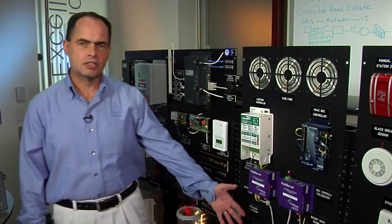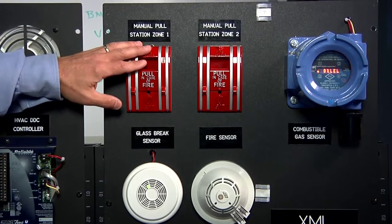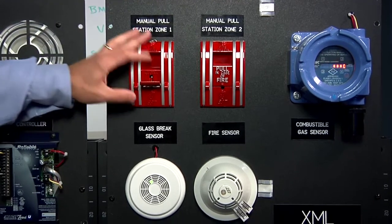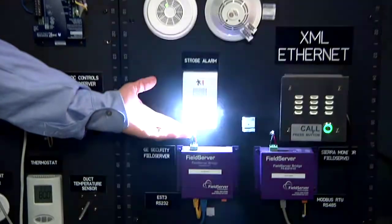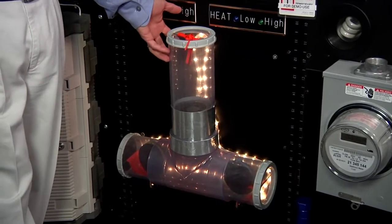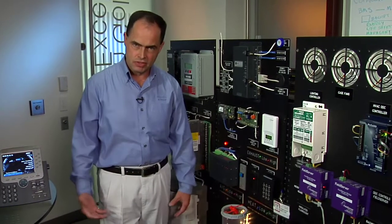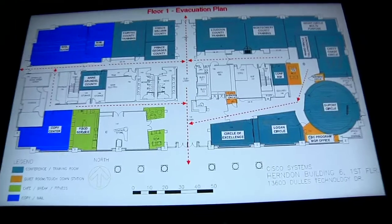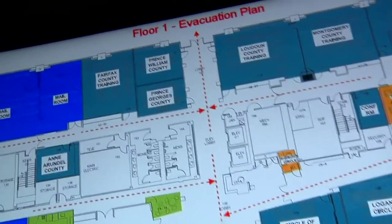Now let's look at how we can extend a traditional fire and life safety system beyond what we normally expect. Here I have a fire pull station — I'll go ahead and pull zone one. We see strobing and alerting as expected, but notice the HVAC system also cut off completely automatically. We're notifying safety, security, and the facilities manager via two-way radio that a fire incident has been indicated, and we're putting up a custom evacuation map on the digital sign using a digital media player connected to the IP network.